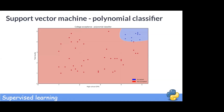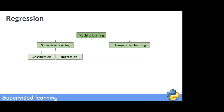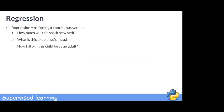Now, what about regression? While classification assigns a category, regression assigns a continuous variable — that is, a variable that can take any value. For example: how much will this stock be worth? What is this exoplanet's mass? How tall will this child be as an adult?